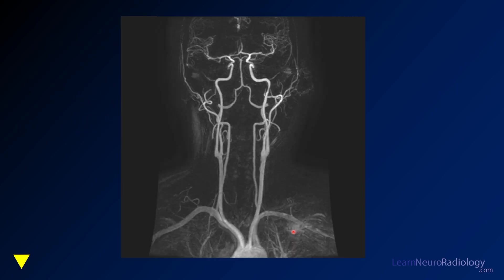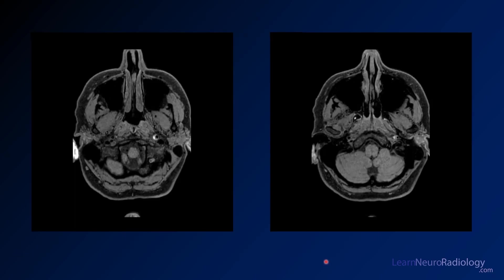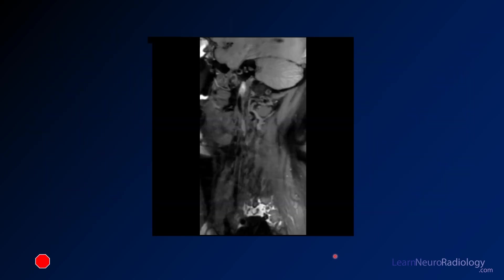Here are some images. This is a MIP from an MRA of the neck — just take a look and see if you see any abnormalities. Here you see some axial images through the neck. These are special types of images that you may or may not recognize, but be on the lookout for the abnormality. We'll talk more about the image type in just a second. These are sagittal images through the same region of the abnormality, and it's the same image type.